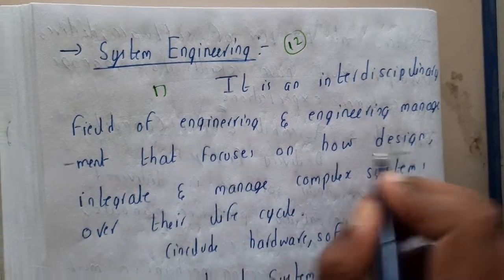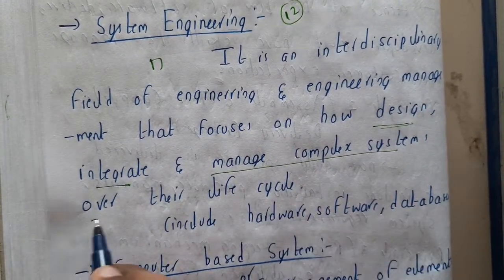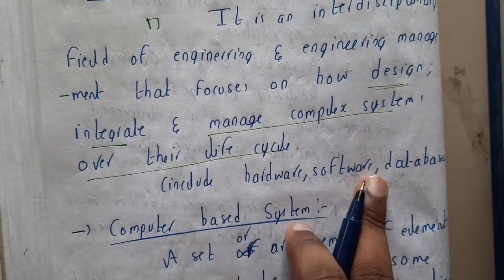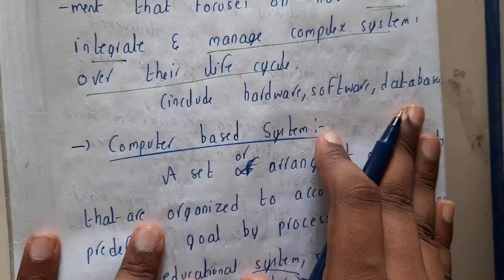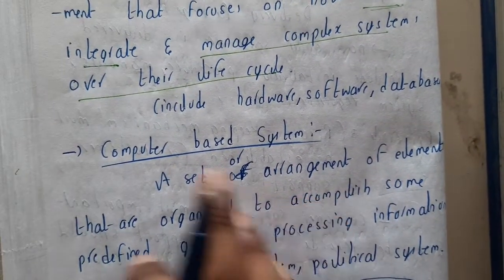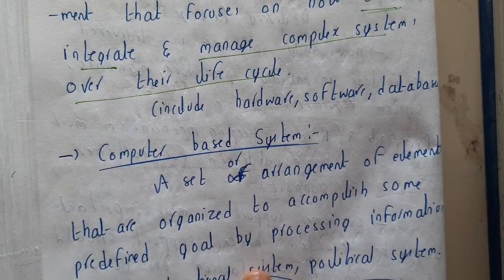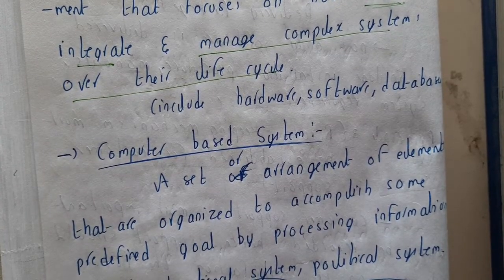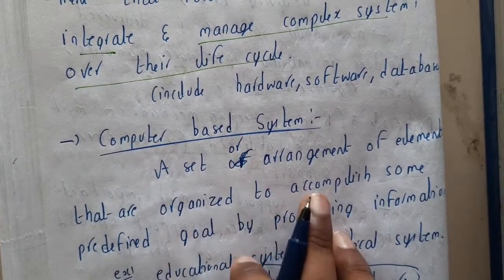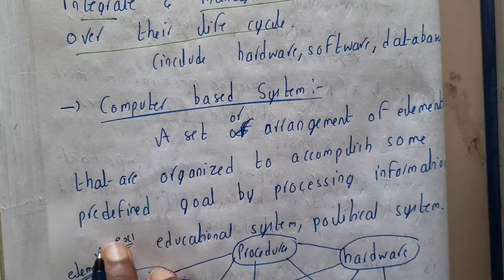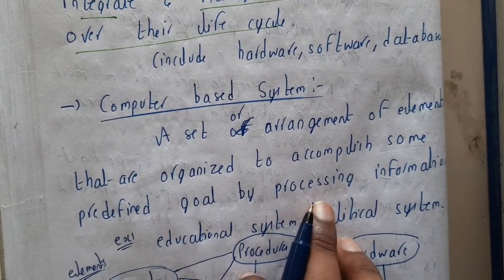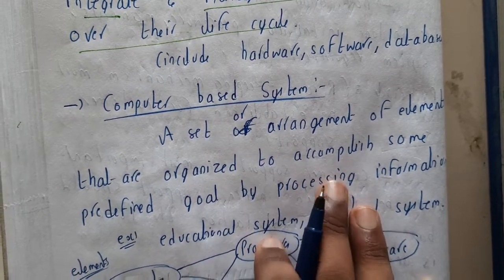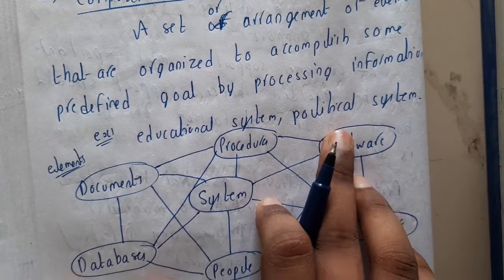System engineering focuses on how to design, integrate, and manage complex systems over the life cycle. It includes hardware, software, and databases. A small example: computer-based systems. A computer-based system is a set of elements connected through cables or any arrangement organized to accomplish some predefined goal by processing information.